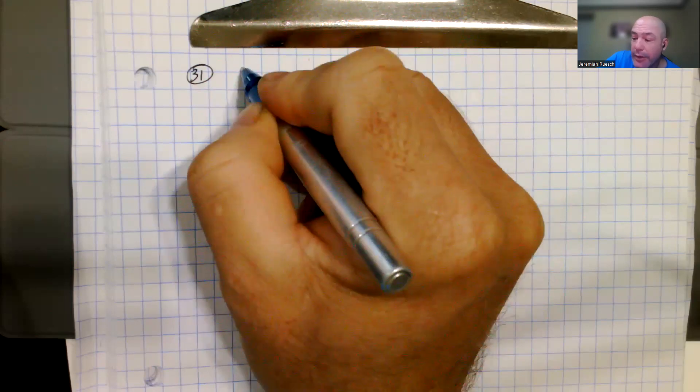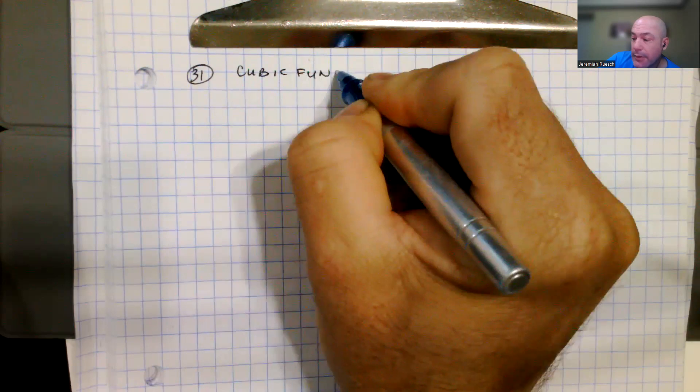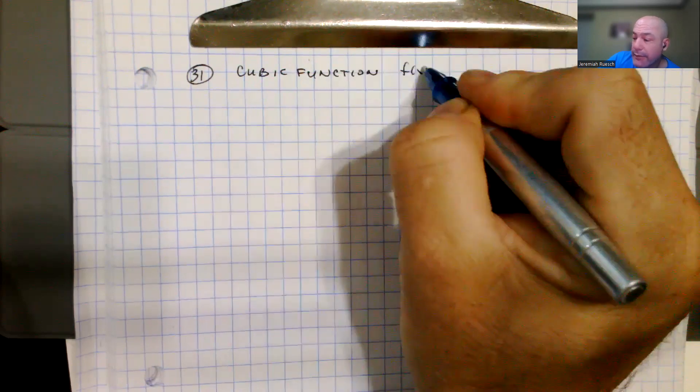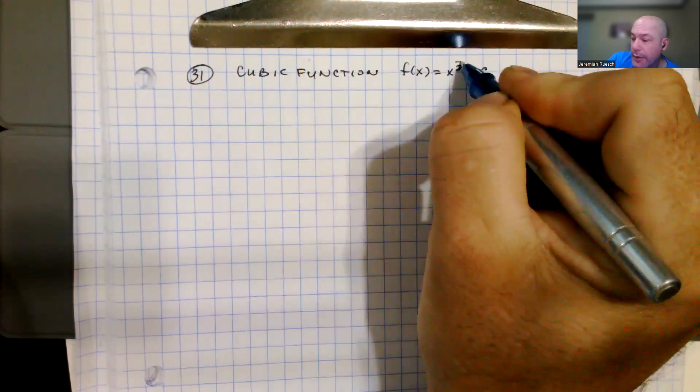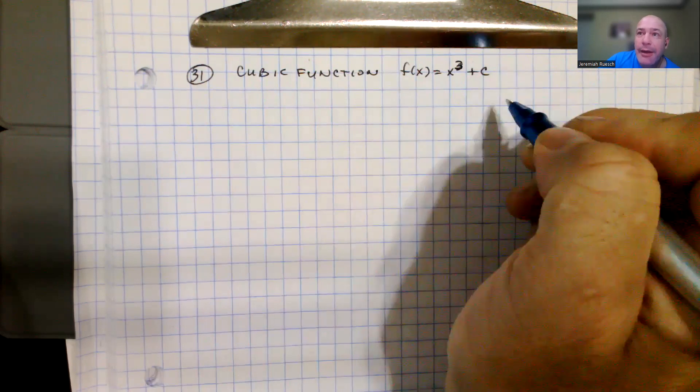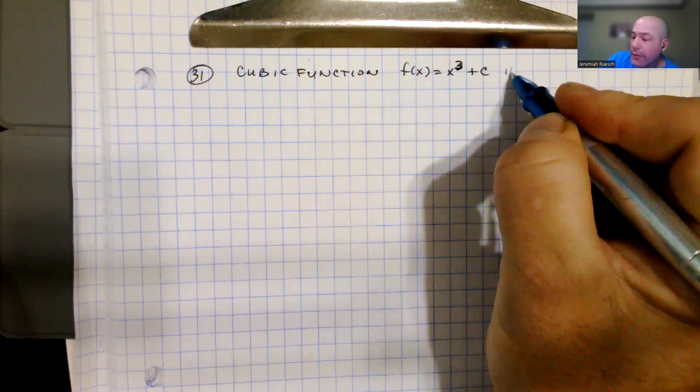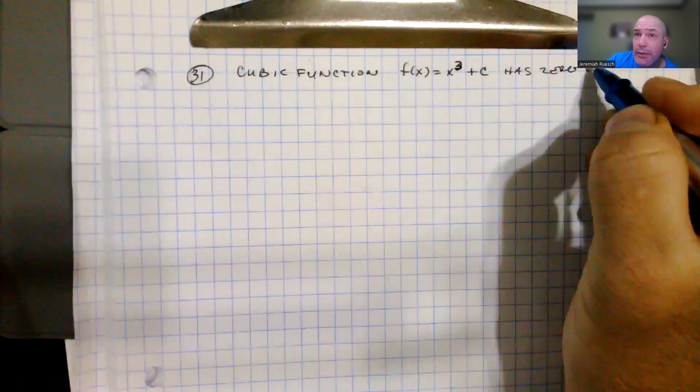This question asks about a cubic function of the form f(x) equals x cubed plus c, and it has one zero at x equals 1 plus i square root of 3.